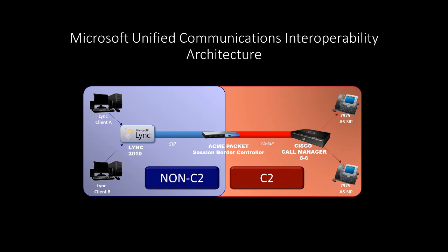To start, let's take a quick look at the architecture. As you can see, we have built a hybrid environment that serves both C2 and non-C2 users. This affords you the flexibility to choose the blend that makes most sense for your organization, allowing for tremendous cost savings and user flexibility. We have integrated Microsoft Lync 2010 with Cisco Call Manager 8.6.2 with a direct SIP trunk via an Acme Packet Session Border Controller. By utilizing the Acme Packet SBC, both vendor technologies can interoperate, and we can effectively translate SIP to ASSIP and vice versa.